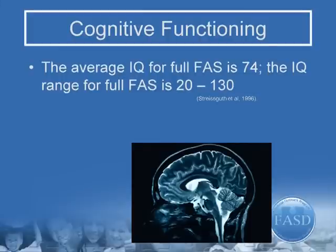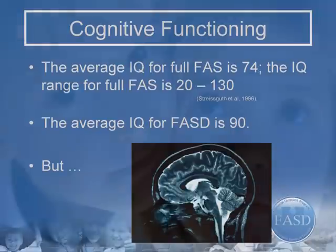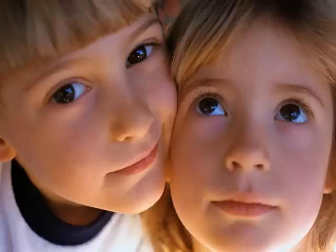The average IQ for full FAS, or fetal alcohol syndrome, is 74. The IQ range for full FAS is 20 to 130. The average IQ for fetal alcohol spectrum disorder, or FASD, is 90. However, IQ scores in the normal range are sometimes unreliable and misleading indicators of ability, since many with FASD are unable to perform at levels indicated by their scores. People who have no visible physical features and who have average IQs may still have significant differences in brain function. Students with FASD may have on and off days, so achieving a true IQ score is difficult.